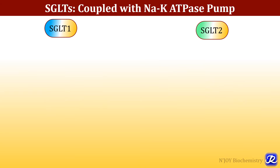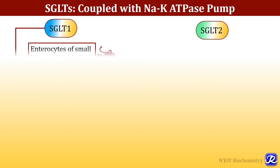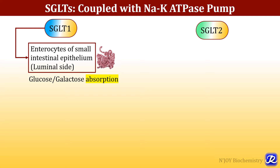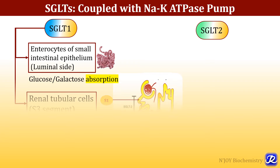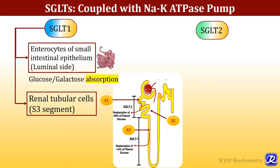The transport of glucose with the help of SGLTs is coupled with the sodium-potassium ATPase pump. There are two types of SGLTs: SGLT1 and SGLT2. SGLT1 is located in the enterocytes of small intestinal epithelium on the luminal side, and is responsible for glucose and galactose absorption in the intestinal cell. SGLT1 is also located in the renal tubular cells, specifically the S3 segment.